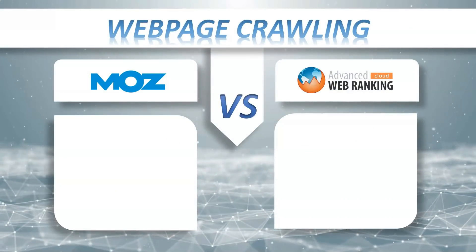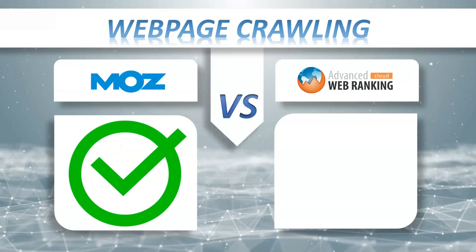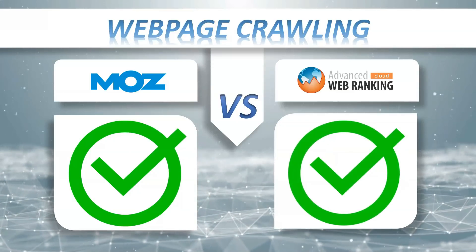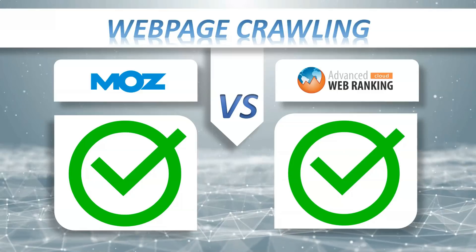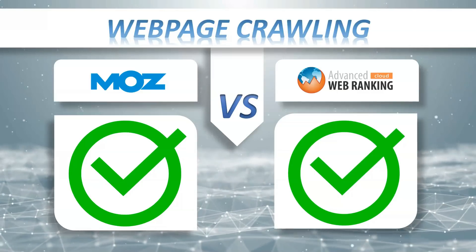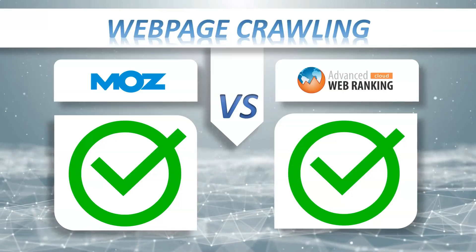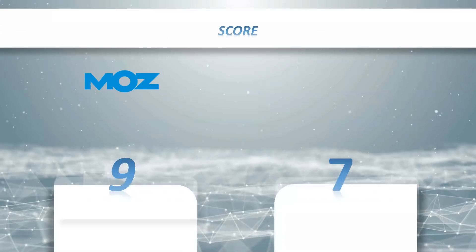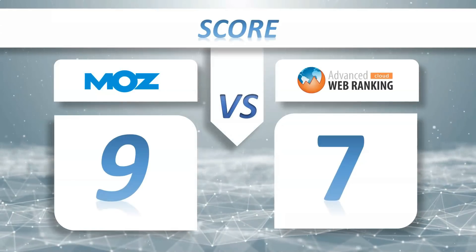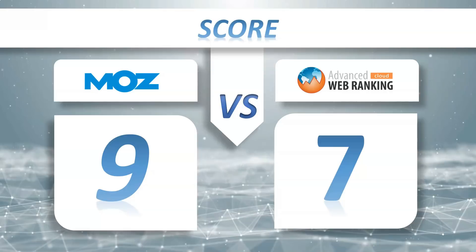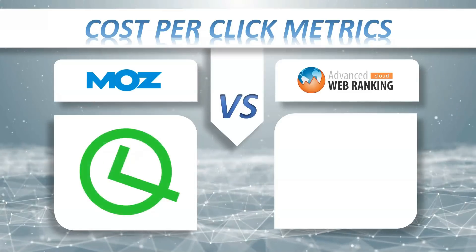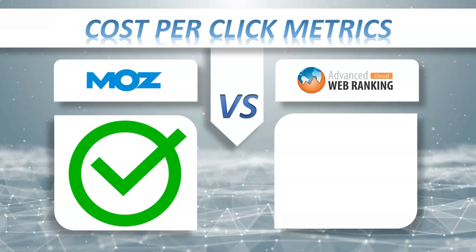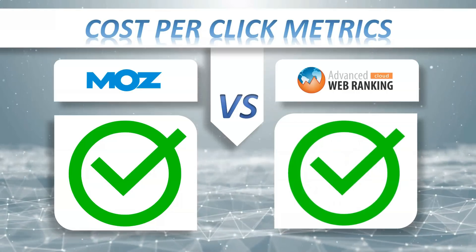Web Page Crawling: MostPro yes, AWR Cloud yes. It crawls all the pages it finds on your website, then provides an overall SEO health score, visualizes key data in charts, flags all possible SEO issues, and provides recommendations on how to fix them. Score so far: MostPro 9, AWR Cloud 7.